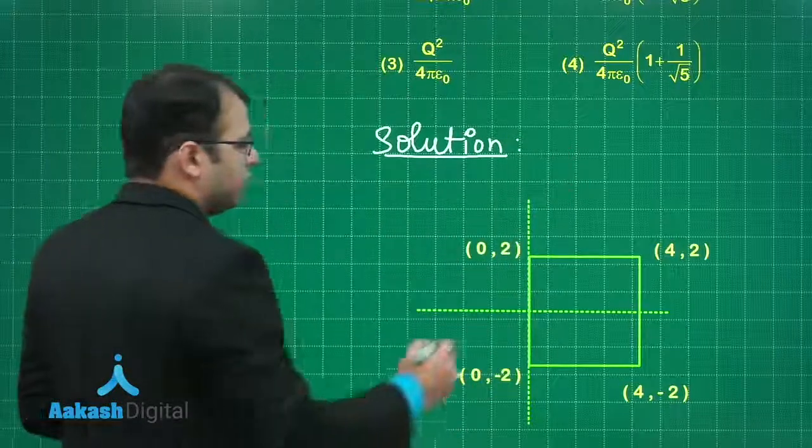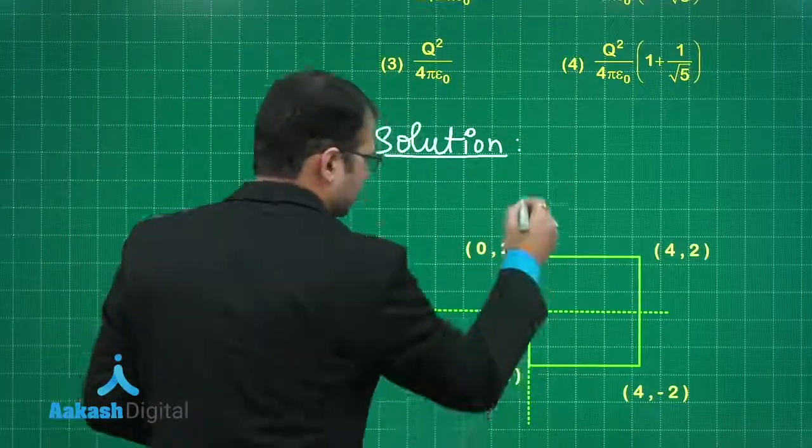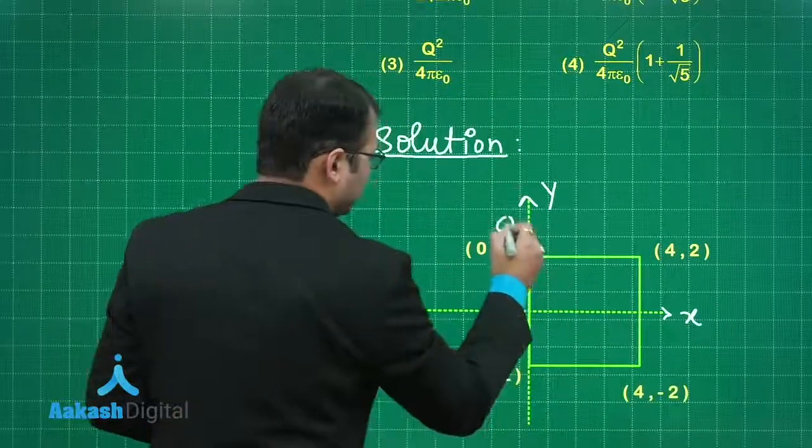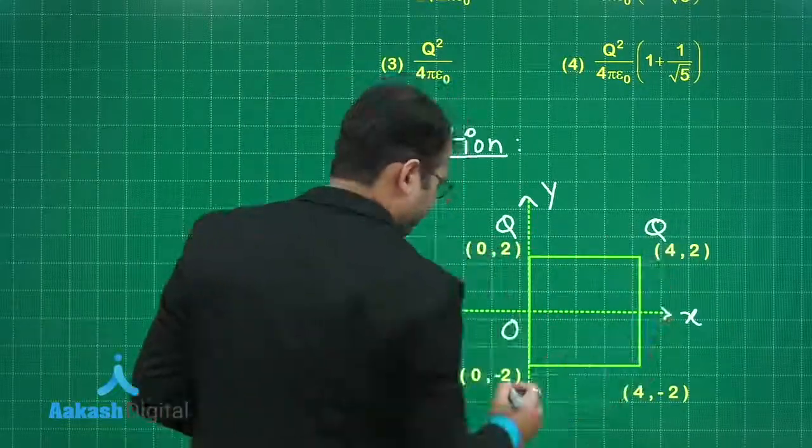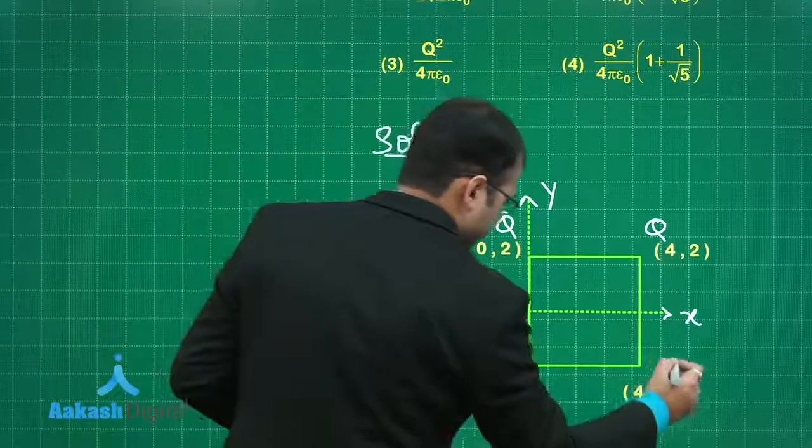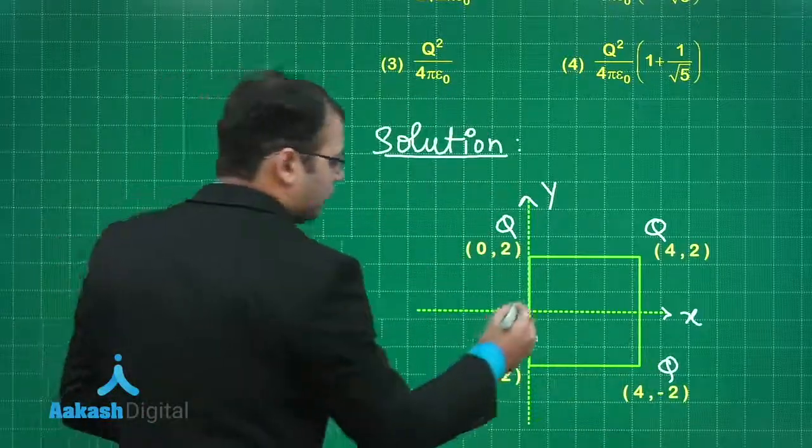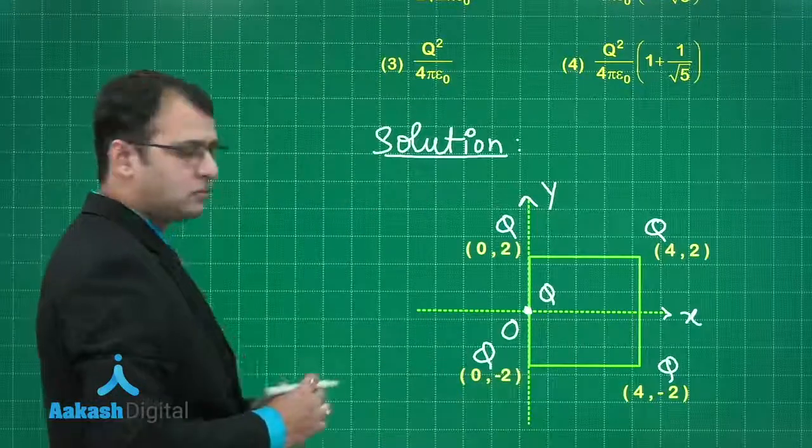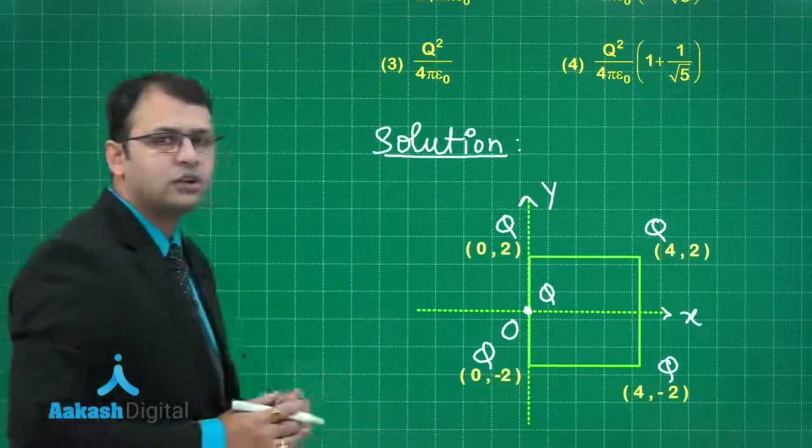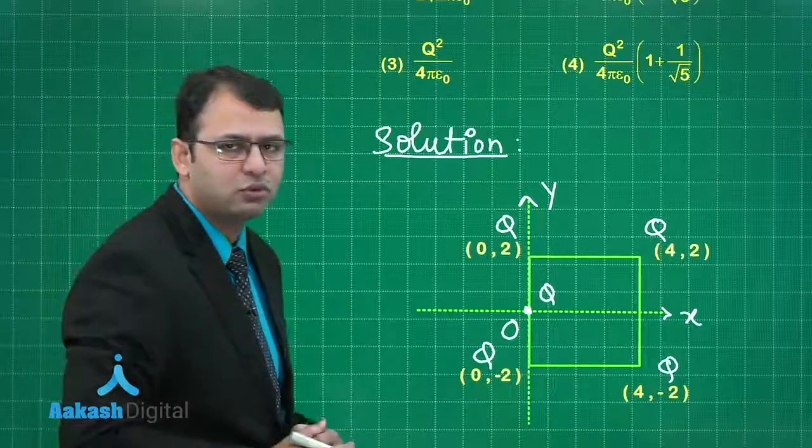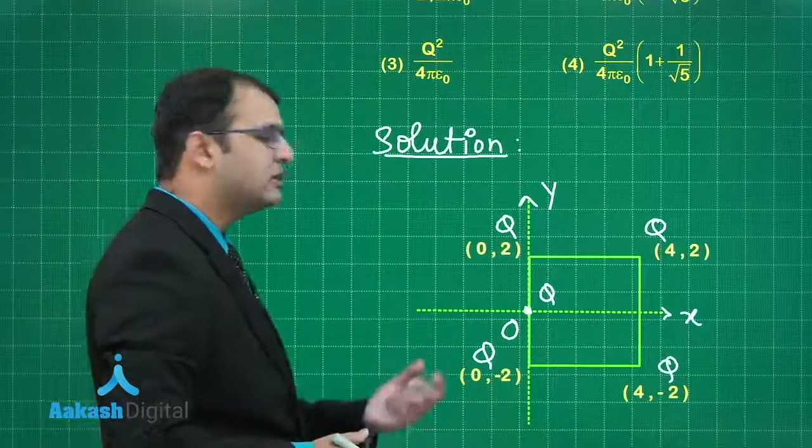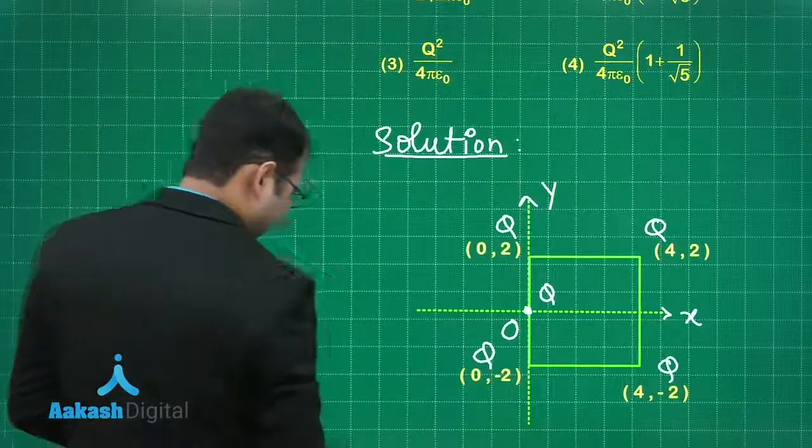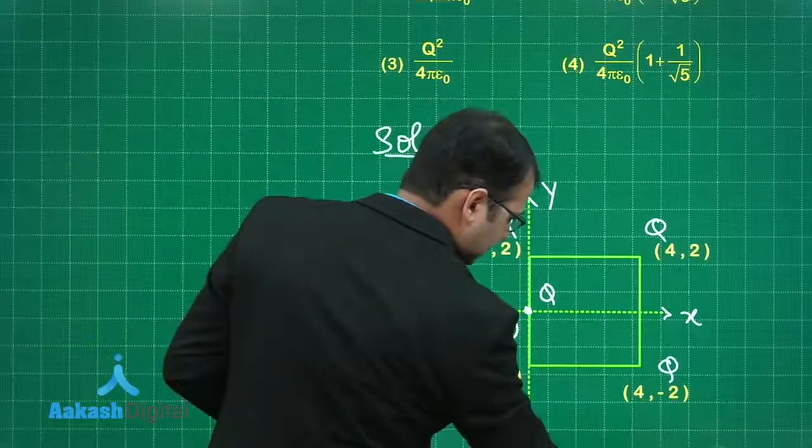Here you see this would be the origin, this would be the y-axis and this would be the x-axis. All the corners have charge capital Q. We want to put a new charge capital Q here. At infinity the potential would be zero, so our only concern is to find the potential at origin. For that we need distances.